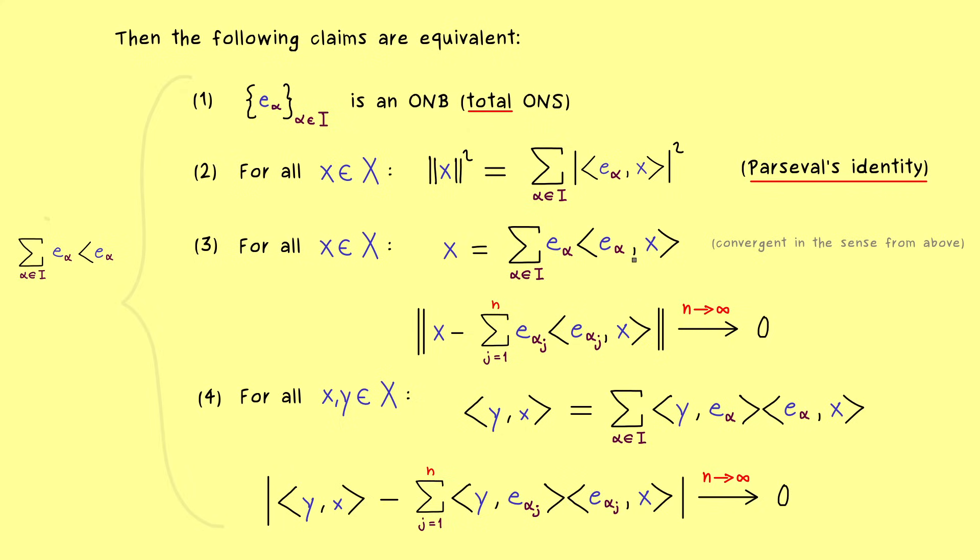For example, here we get x out again when we put in x, and here we get yx out when we put in y and x in the inner product. Therefore, the informal way would be to say that this combination is equal to the identity operator on X. In fact, it's a notation you might see a lot in quantum mechanics, but it's essentially just an informal way of writing the equivalences we have stated here. So you can definitely use it as a mnemonic device to remember Parseval's identity.